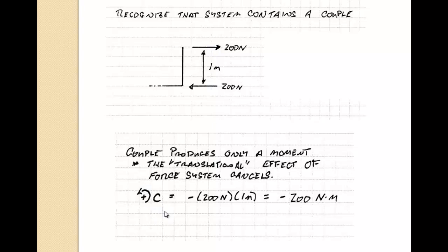So here it is. I'm using C for the couple. And here's the counterclockwise direction being positive. The negative sign just comes in because of my designation of clockwise as negative. And it has 200 newtons times the perpendicular distance, which gives me a total couple of negative 200 newton meters.